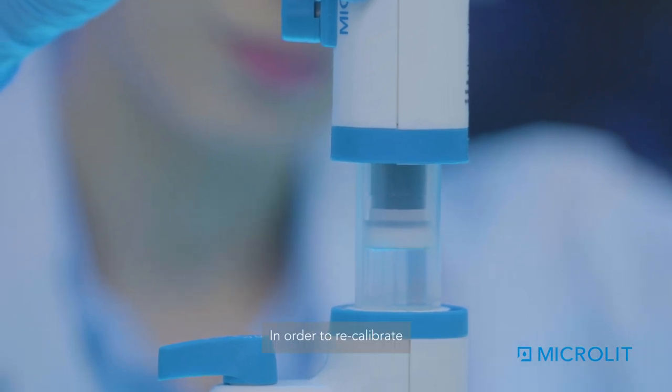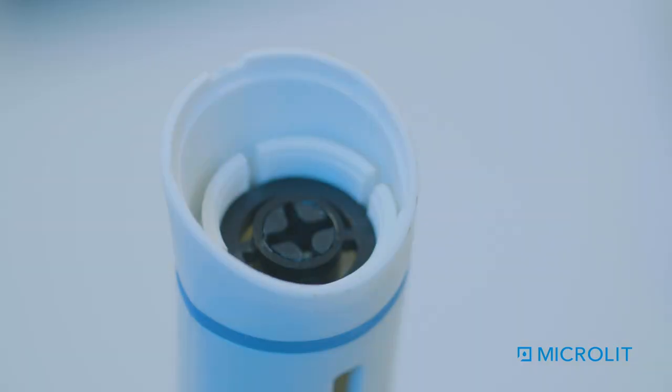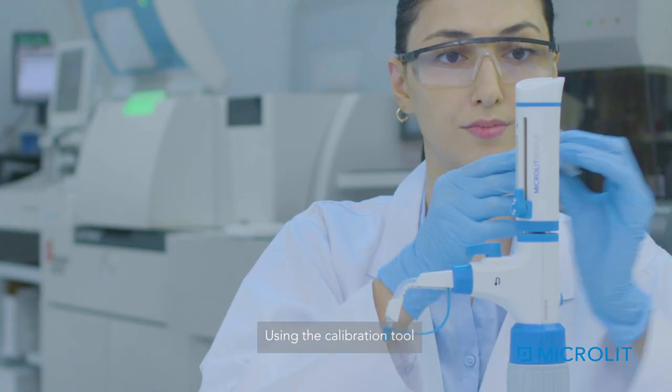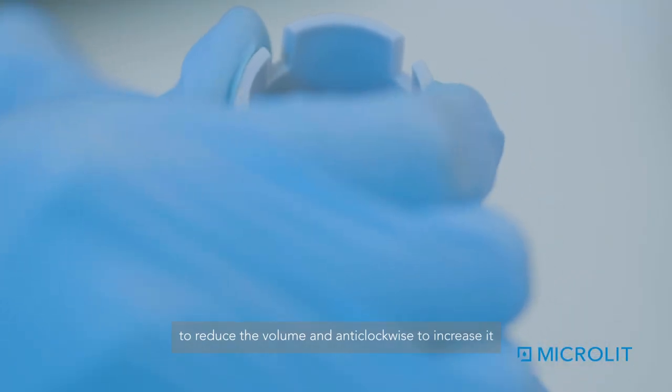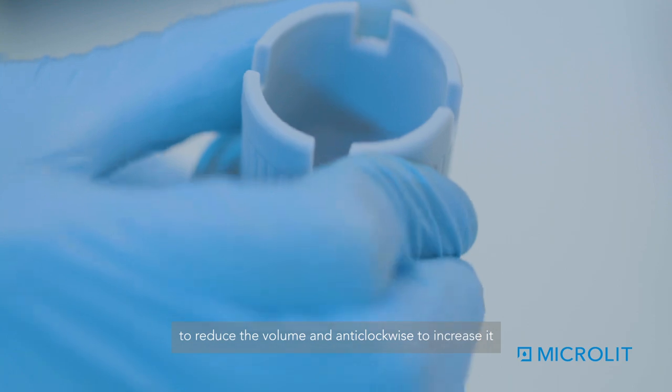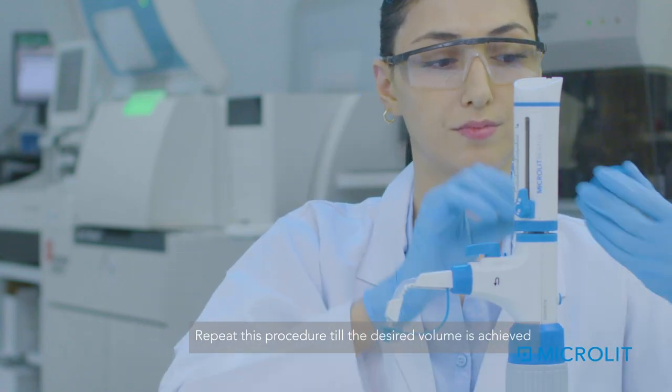In order to recalibrate, pull the cap outwards to expose the calibration nut. Using the calibration tool, turn the calibration nut clockwise to reduce the volume and anti-clockwise to increase it. Repeat this procedure till the desired volume is achieved.